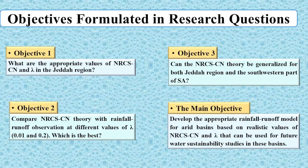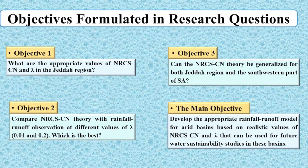The third objective: can the NRCS theory be generalized for both the Jeddah region and the southwestern part of Saudi Arabia? We have already done studies on the southwestern part, and this paper focuses on Jeddah basins, so we want to compare and see if both can be generalized. The main objective coming from these questions is to develop an appropriate rainfall-runoff model for arid basins based on realistic values of CN and lambda, for use in water resources development and sustainability studies.